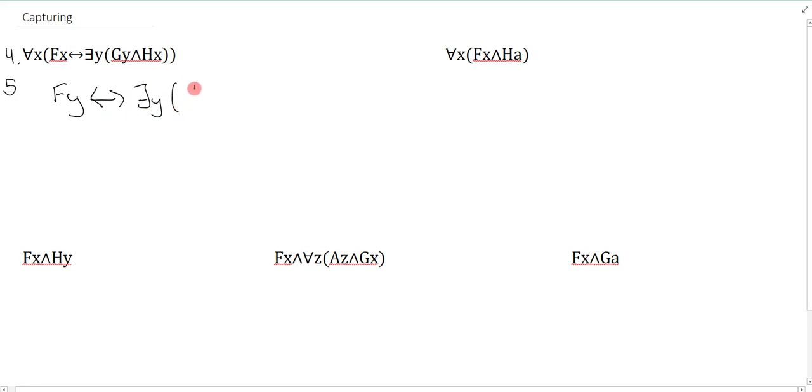And the reason why is because when you look at it, what I've done is I've UI'd, and of course UI says that you have to change all the corresponding variable letters, all of them, because they correspond to that. And so here I change them all to y. But we have a problem now in the finished form.